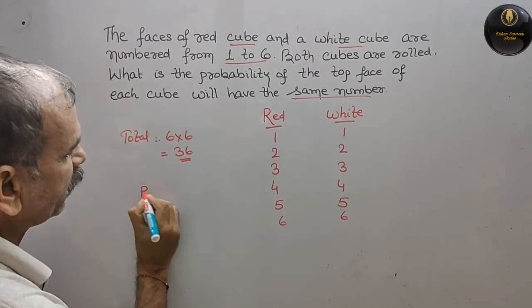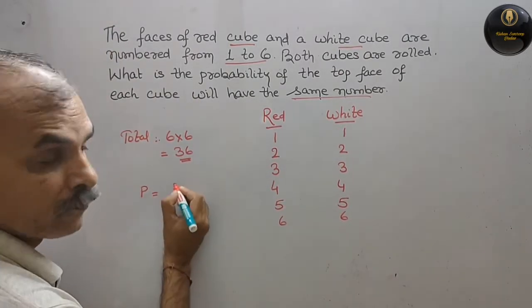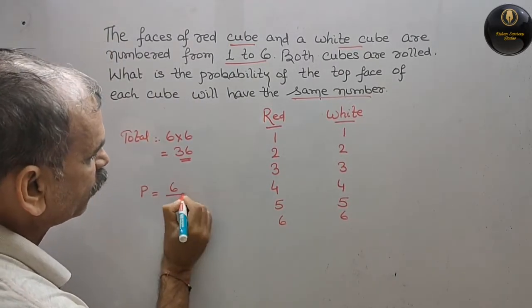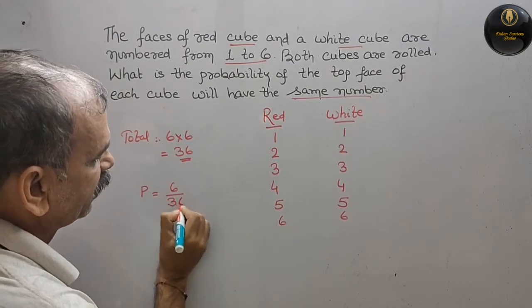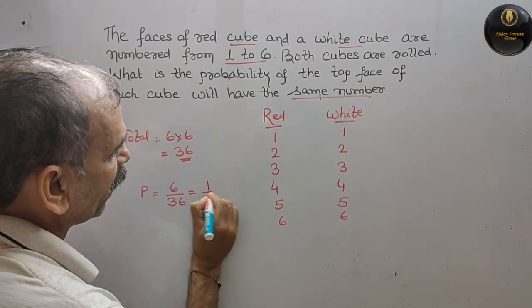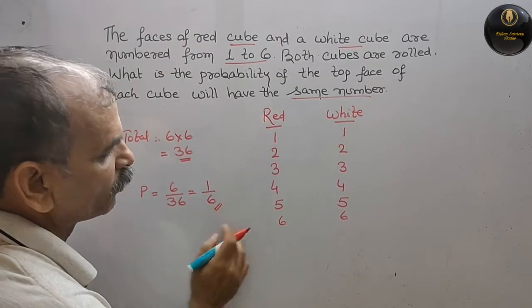Now the probability is 6 by total, that is 36, which equals 1 by 6. So this is the probability.